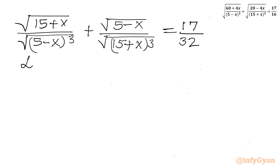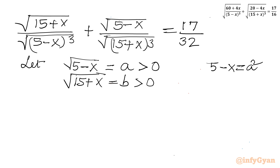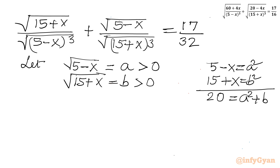Now I will use substitution. Let square root of (5 minus x) equal a, and square root of (15 plus x) equal b. So for real solutions both must be greater than 0, positive. Now I will consider squaring both sides: 5 minus x will be a squared, 15 plus x will be b squared. And if I add both, I can write 20 equal to a squared plus b squared. This I will call equation 1.